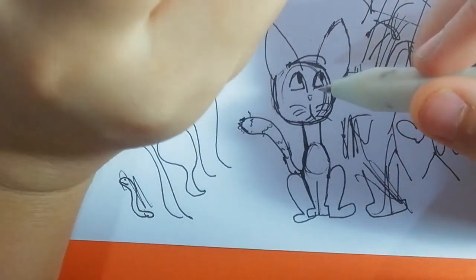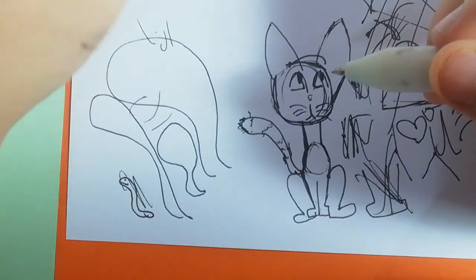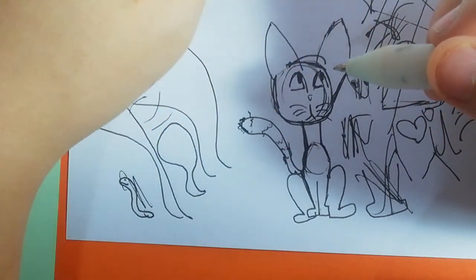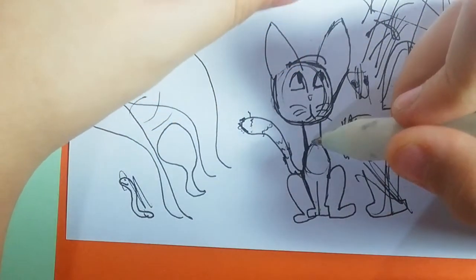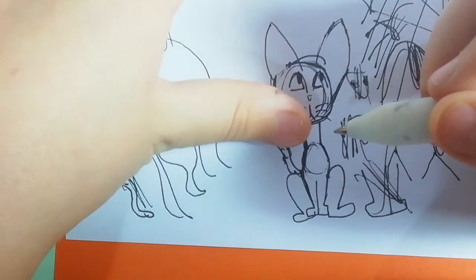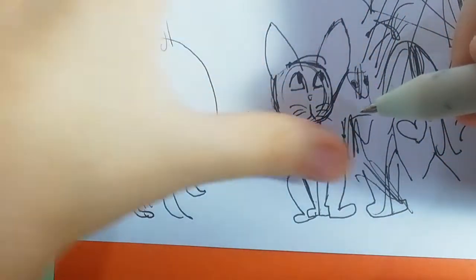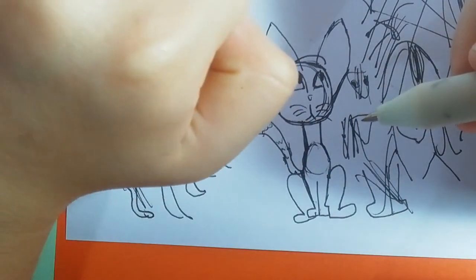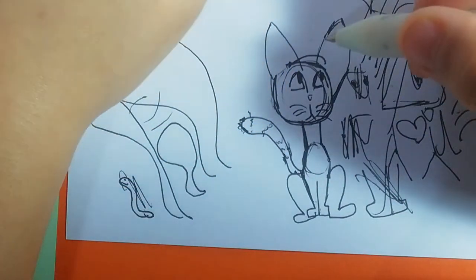You could just go ahead and color it, but I'm not going to color it, because if I color it black, because Egyptian cats are mostly black, then nothing is going to be visible. So if you want, just color any color you want.